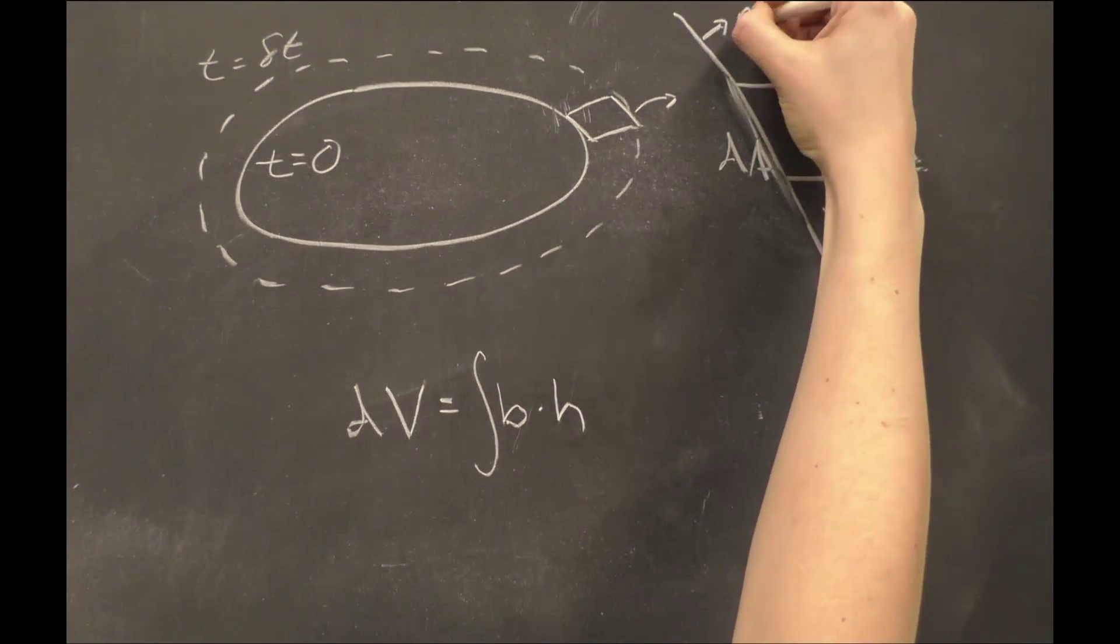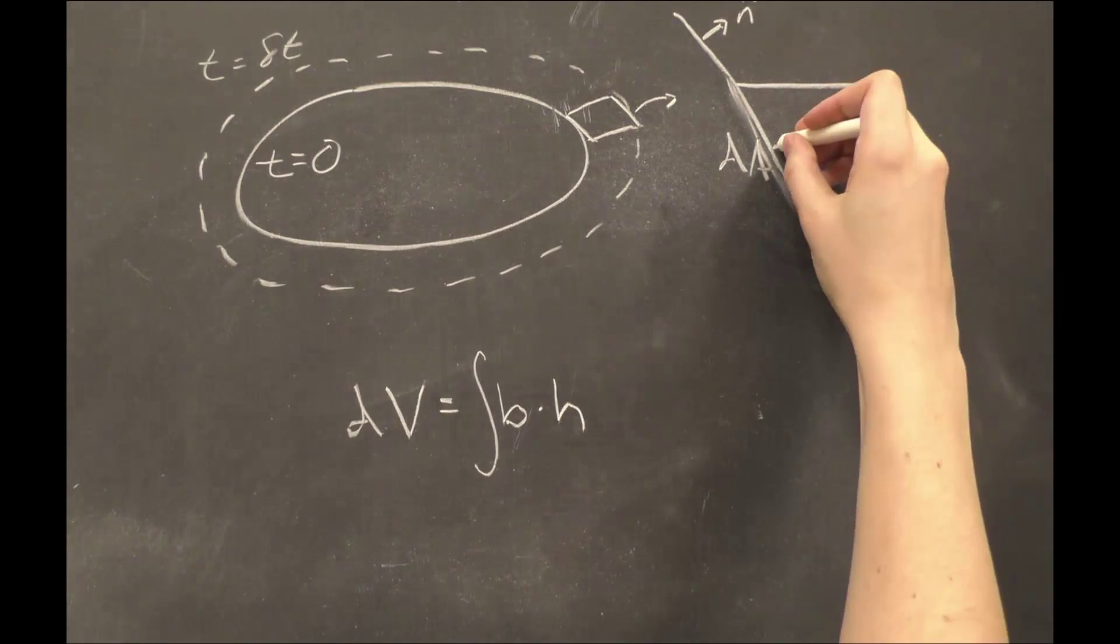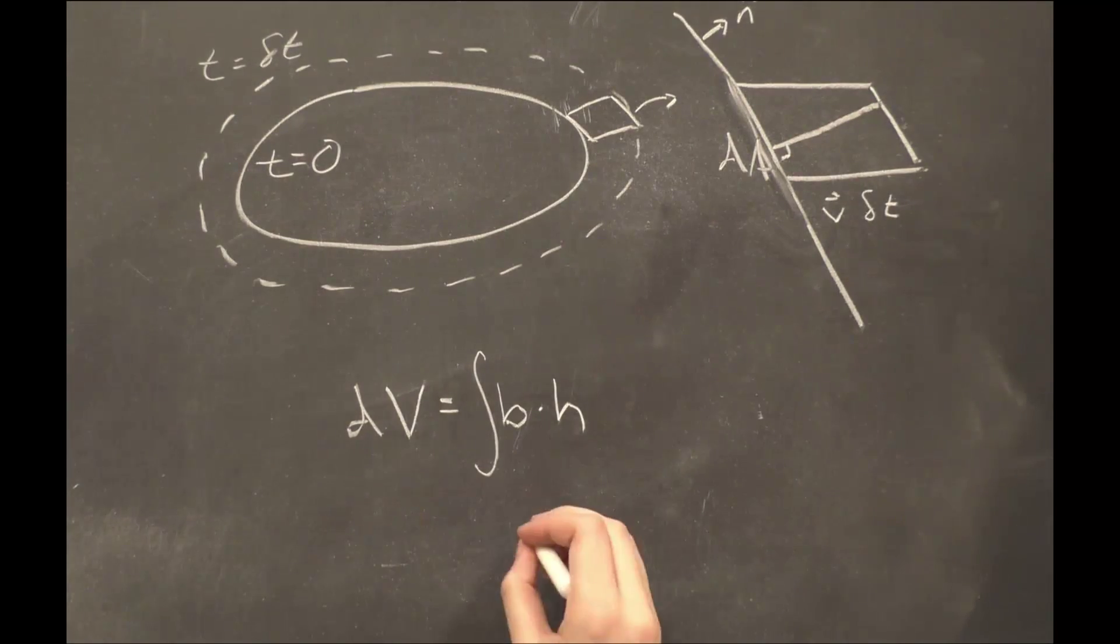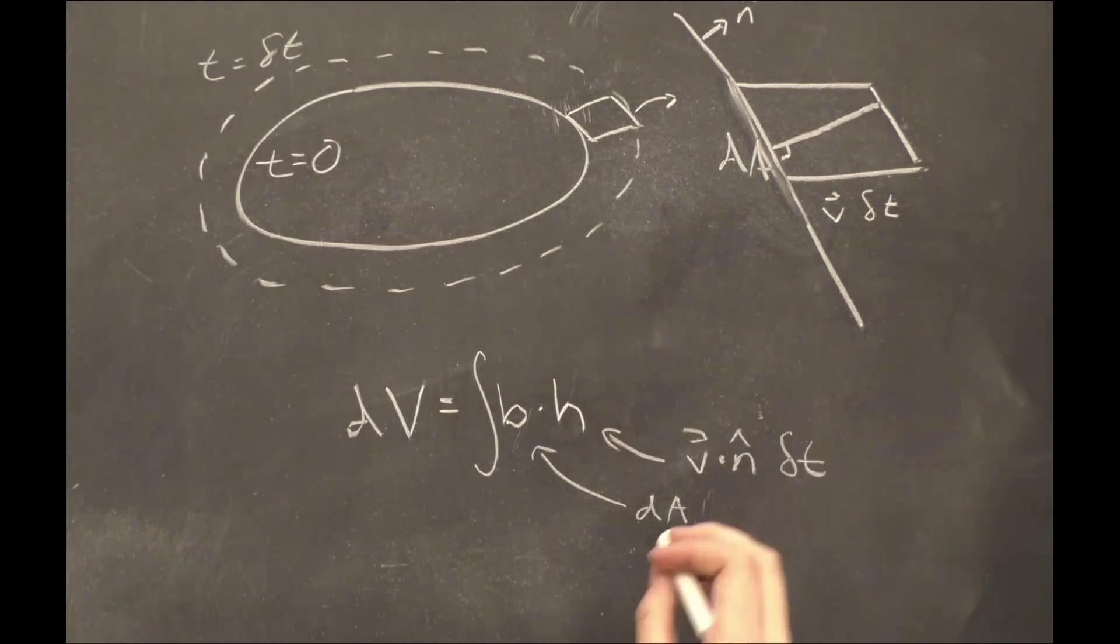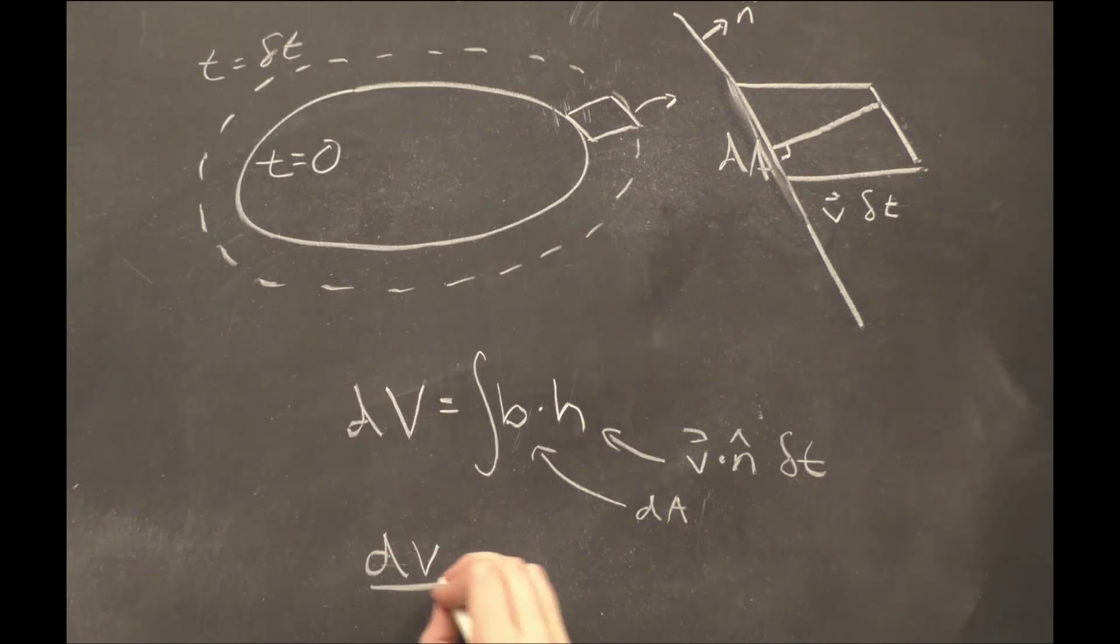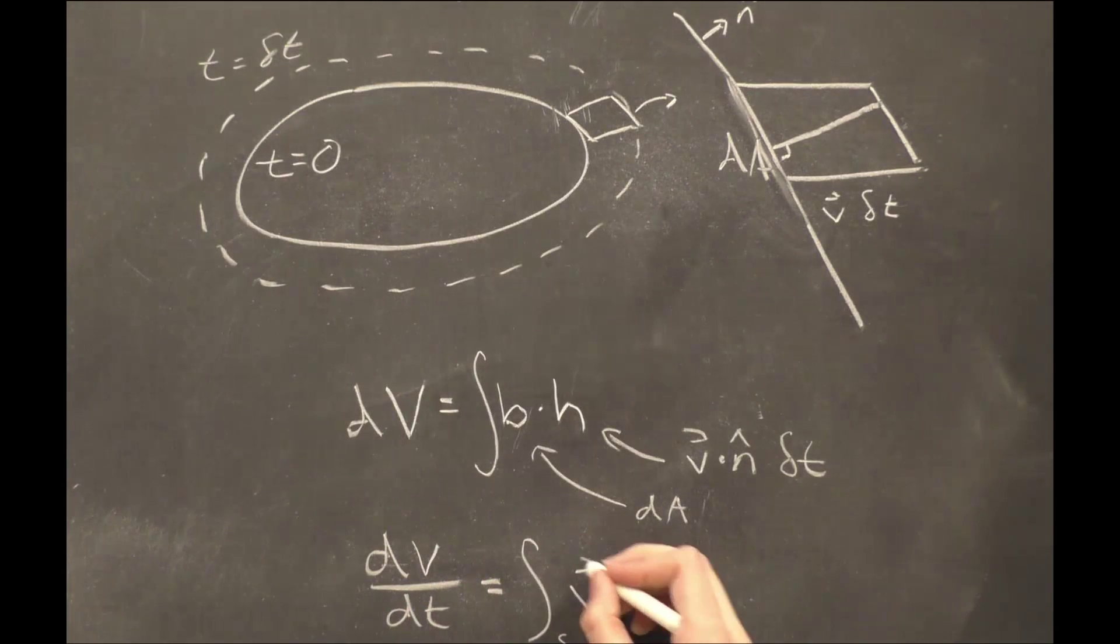The base, in this case, is the length dA, and the height is the component of V dT that is perpendicular to dA. We call n-hat the vector perpendicular to dA, and say dV is the integral of dA V dot n-hat dT. We divide by dT and say dV dT is the integral of V dot n-hat dA.